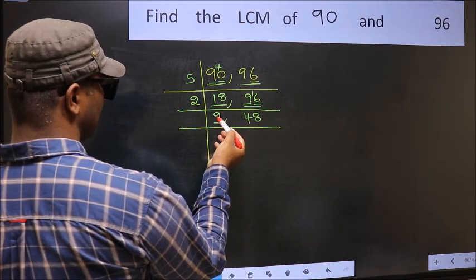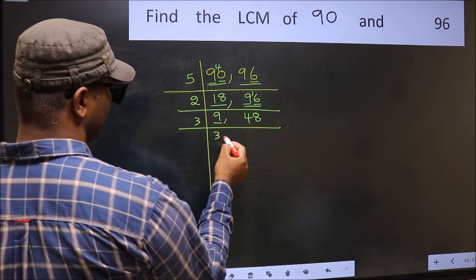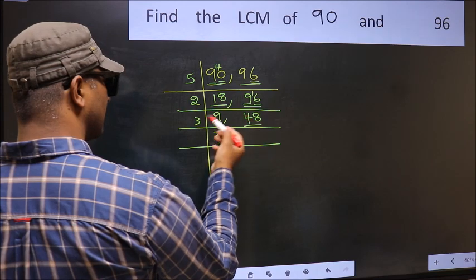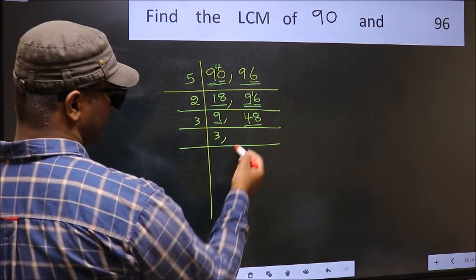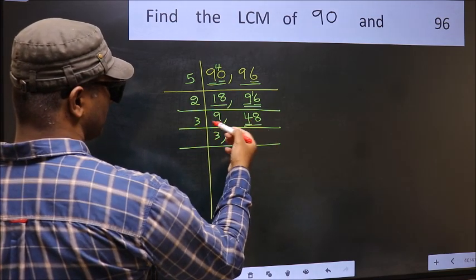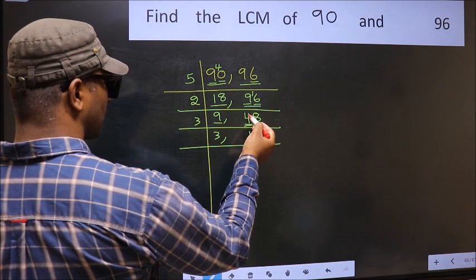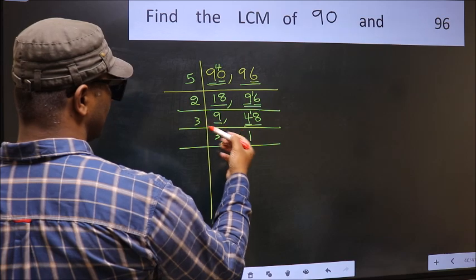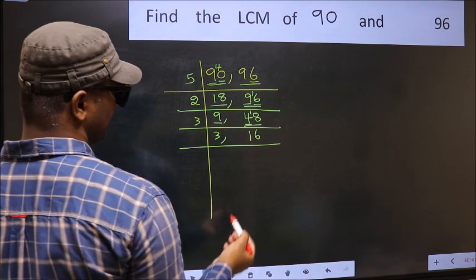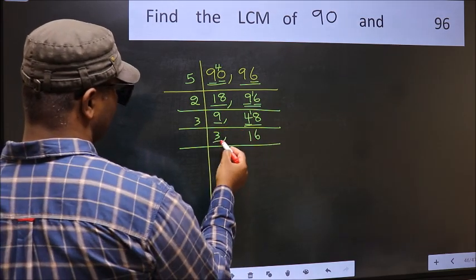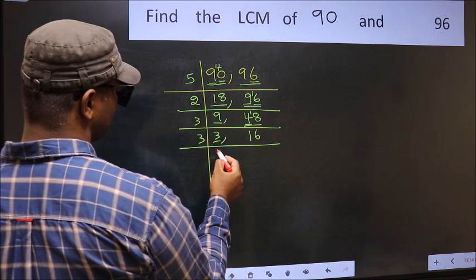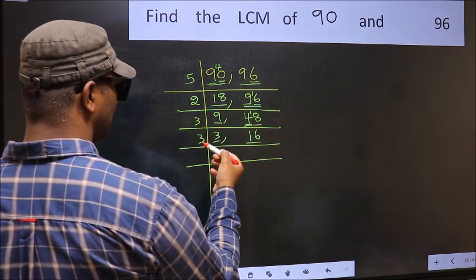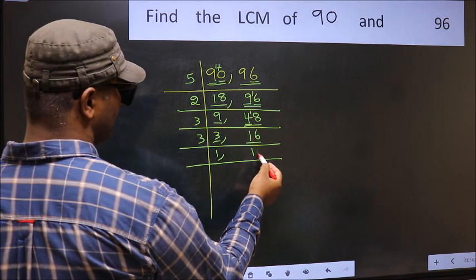Now we have 9. 9 is 3 threes, so divisible by 3. The other number 48 is also divisible by 3. For 48: the first digit is 4; a number close to 4 in the 3 table is 3 once 3. 4 minus 3 is 1, carried forward gives 18. We get 18 in the 3 table at 3 sixes is 18. Now we have 3, which is a prime number, so 3 once is 3. The other number 16 is not divisible by 3, so write it down as it is.